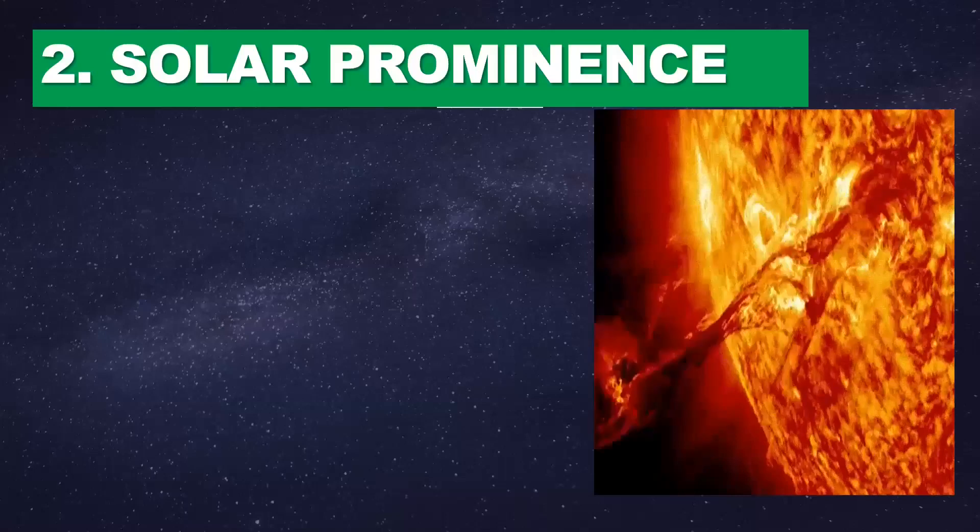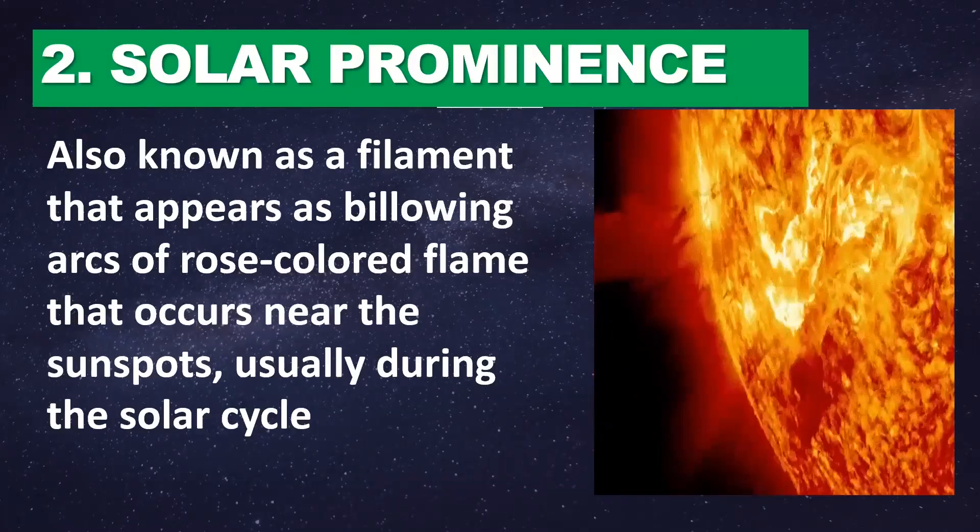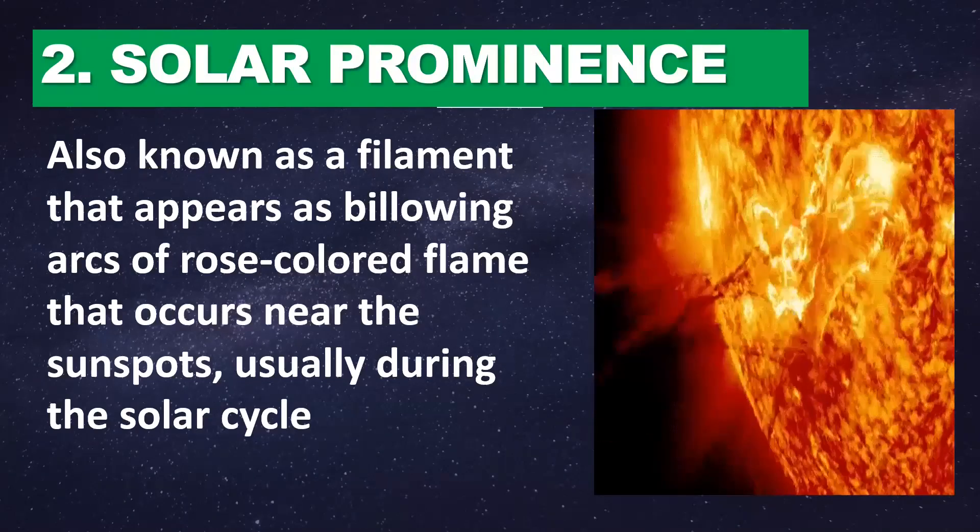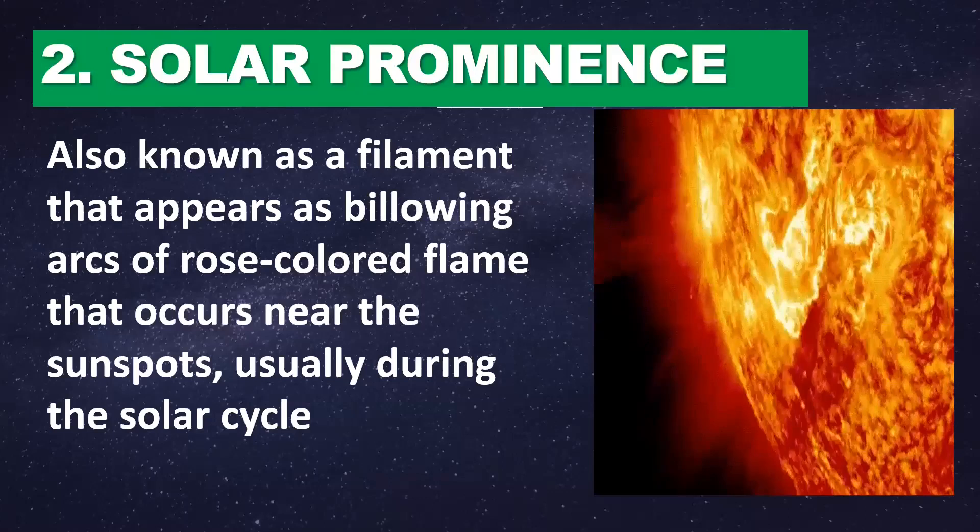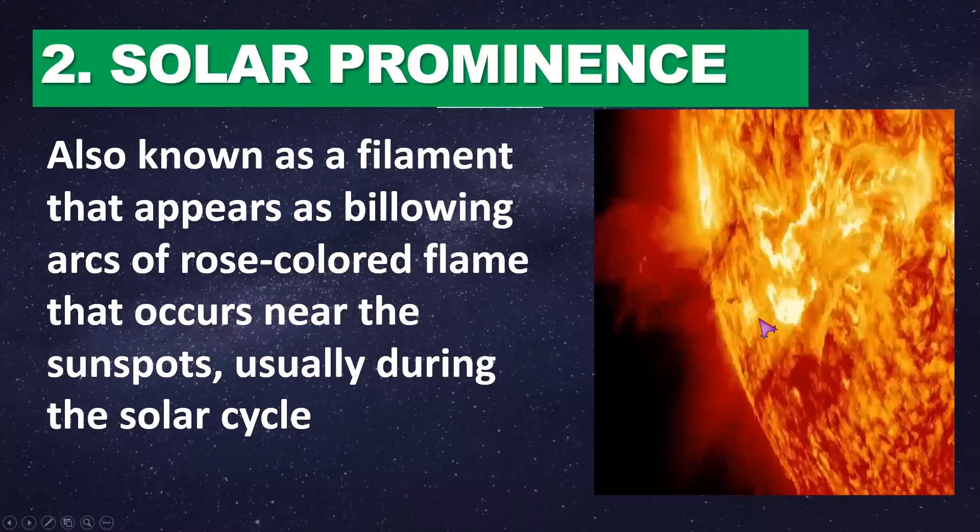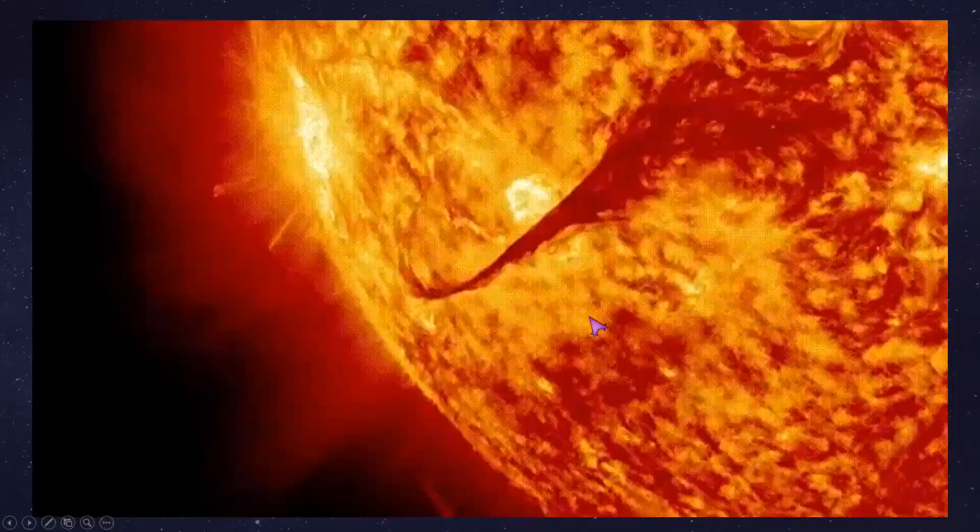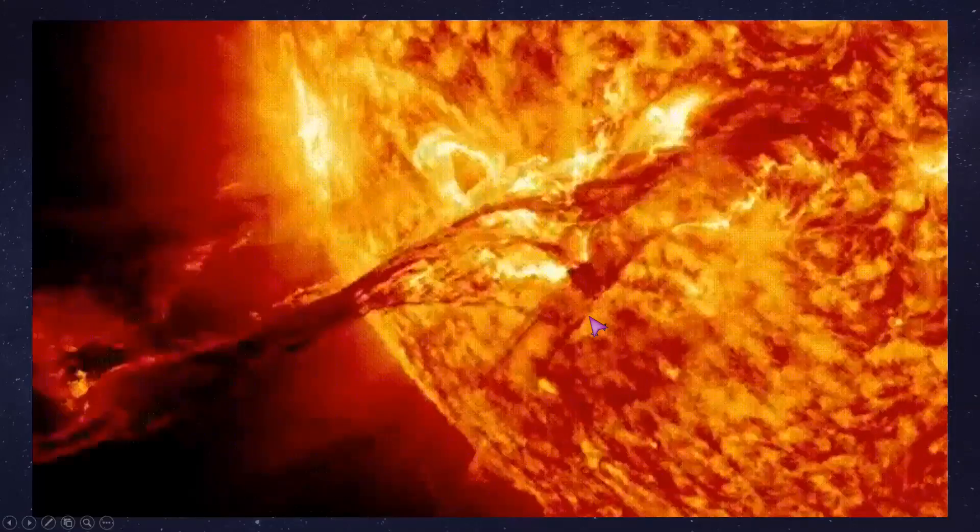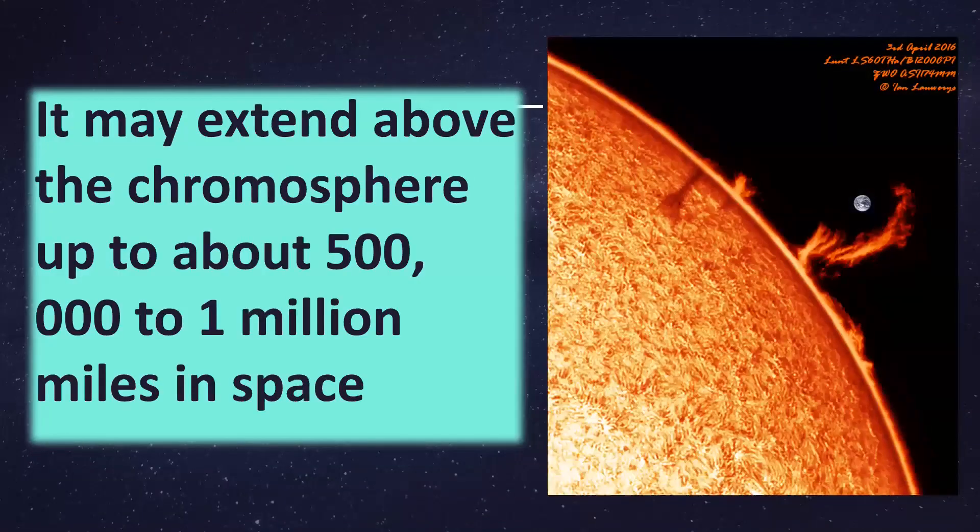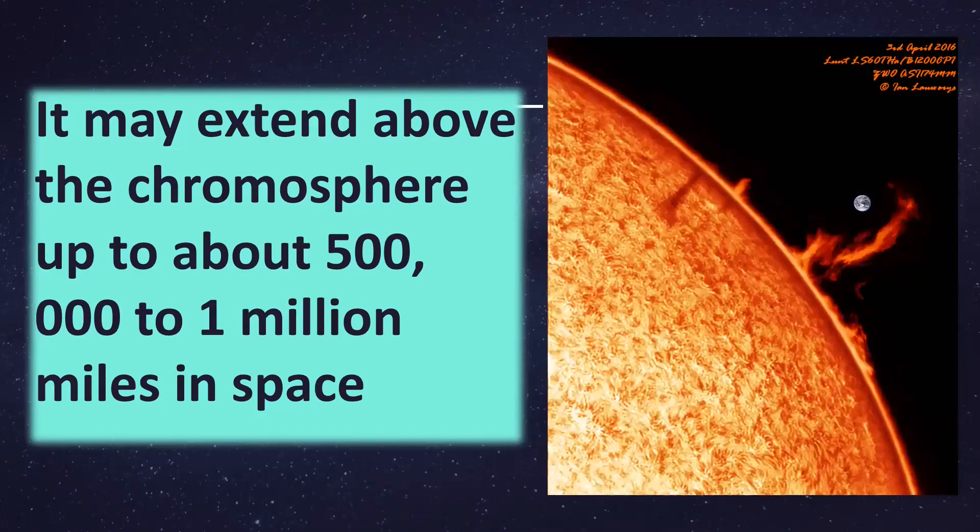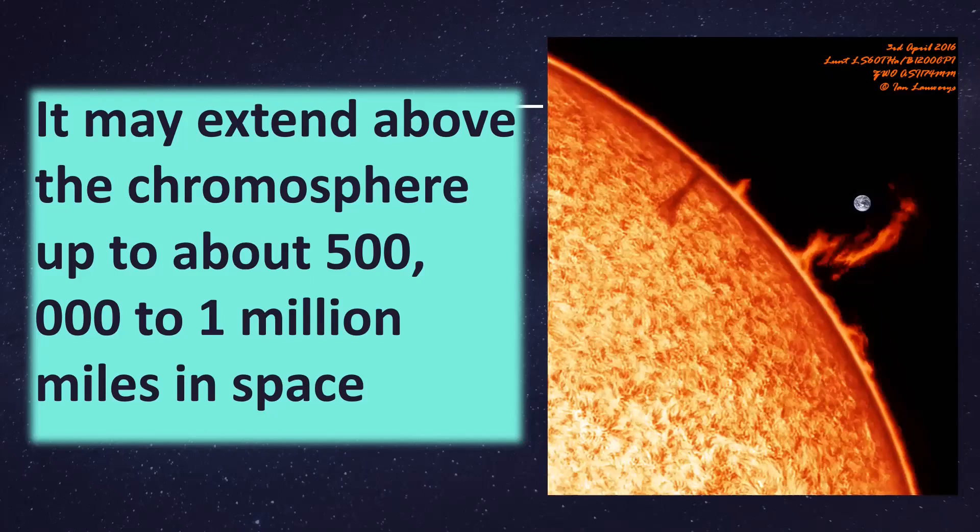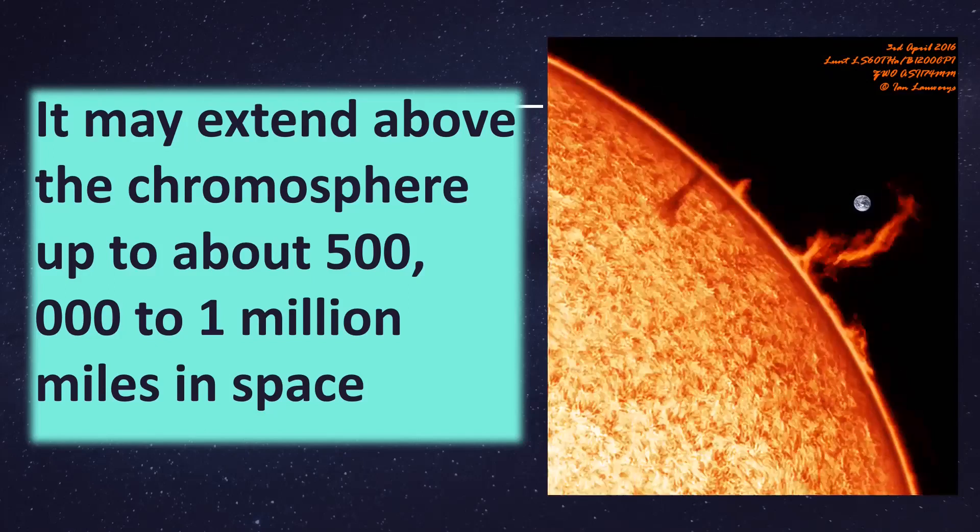Second is the presence of solar prominence, also known as filament, that appears as flowing arcs of rose-colored flame that occurs near the sunspots, usually during the solar cycle. It may extend above the chromosphere up to about 500,000 to 1 million miles in space.